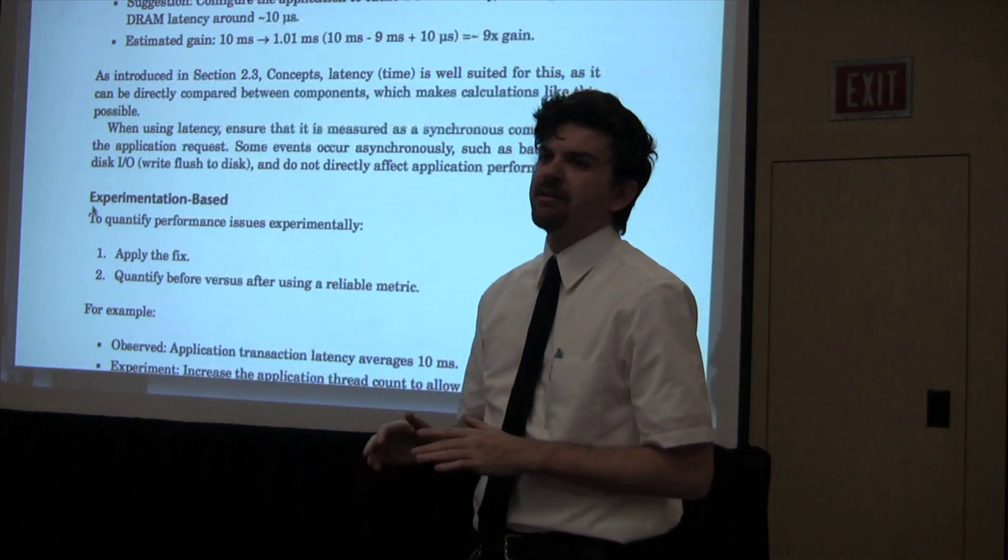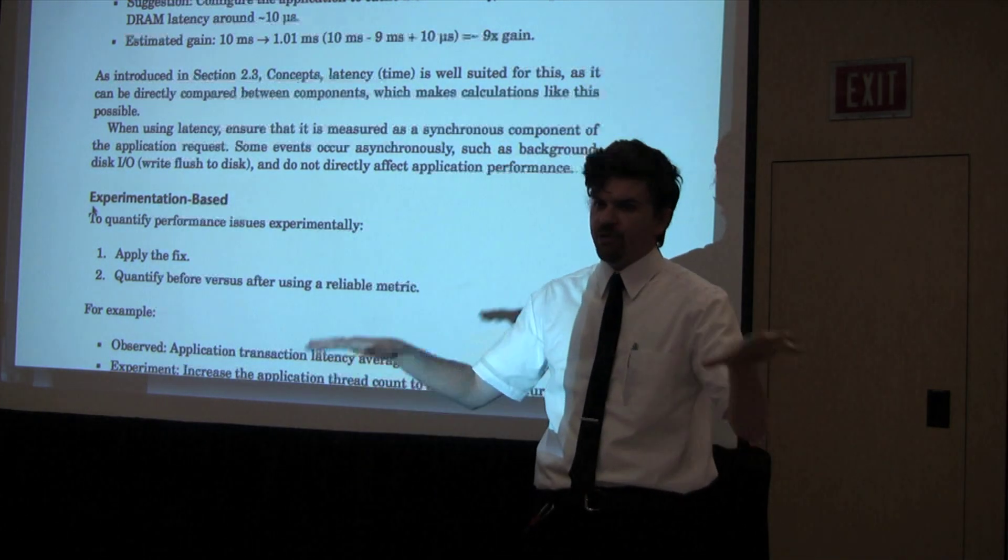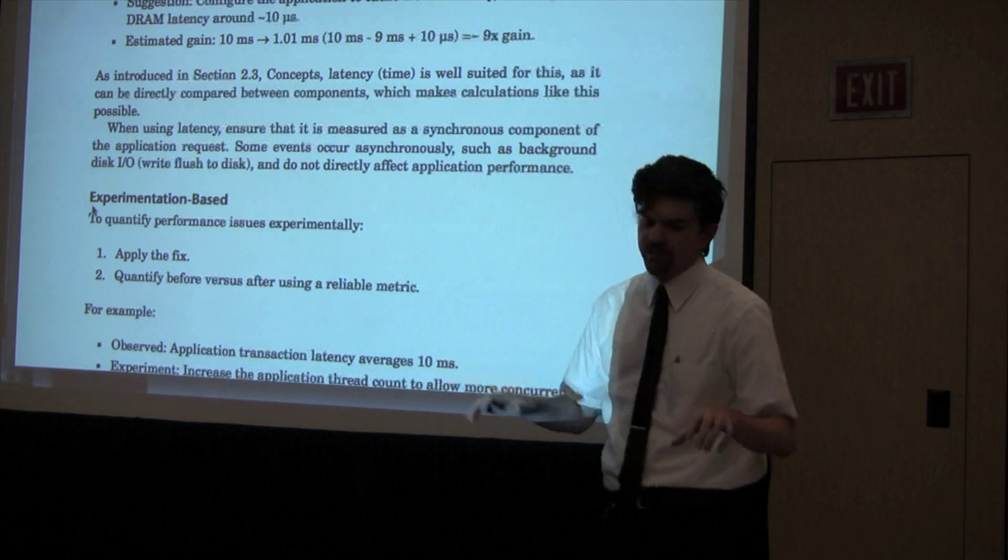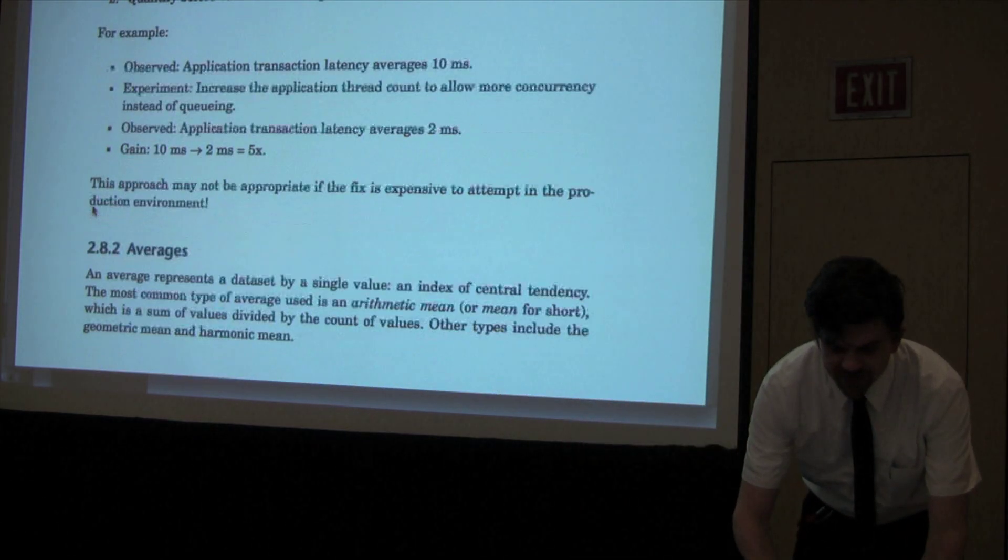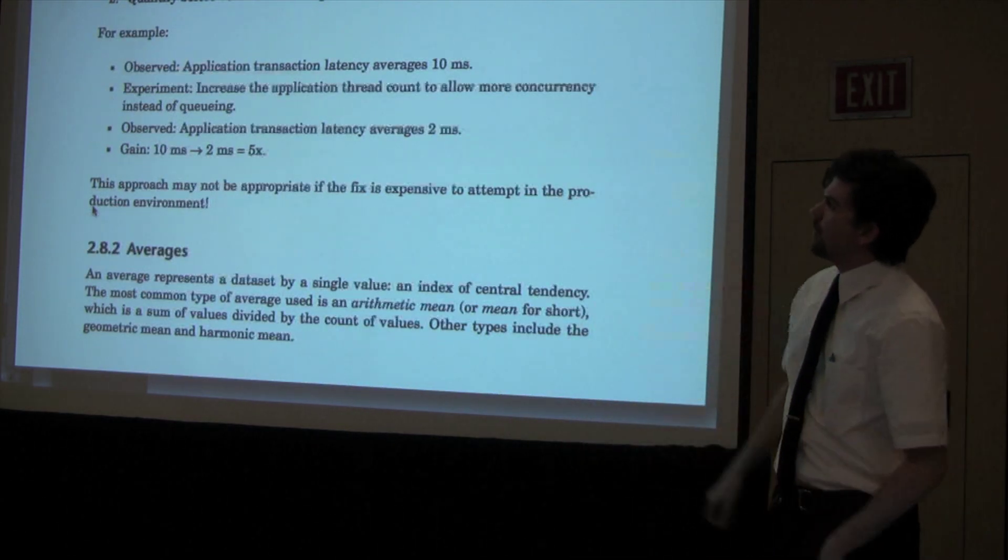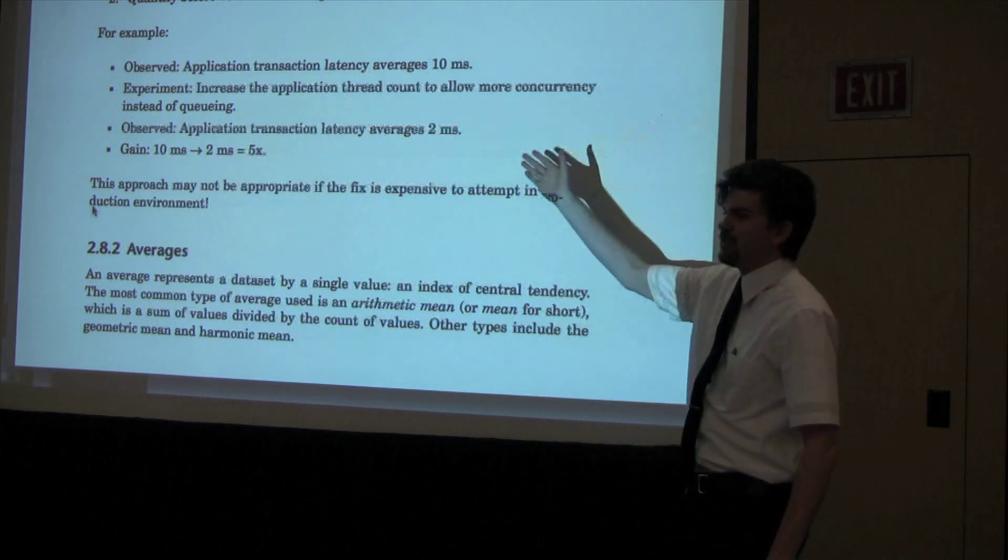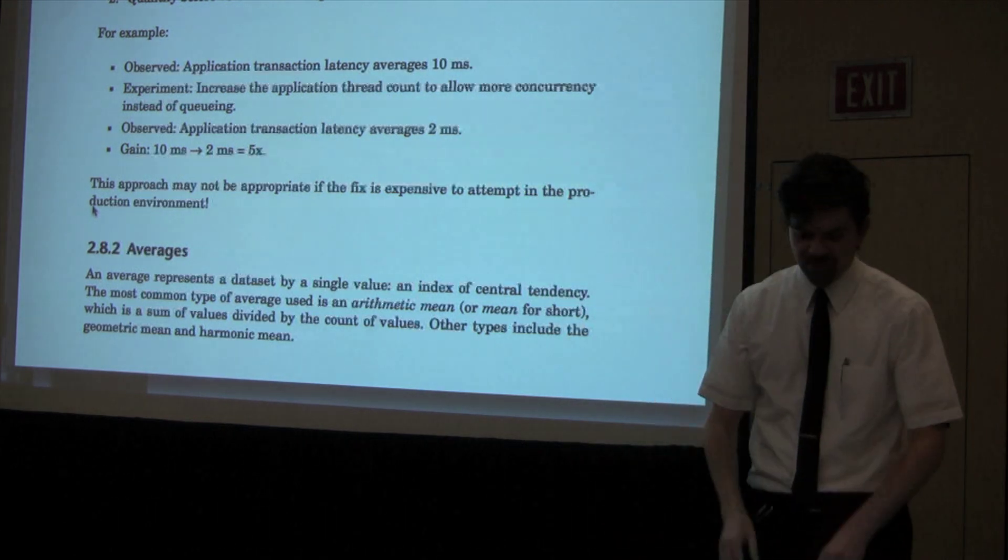We can do math like this because we've converted various metrics like throughput and IOPS into a common unit of currency. Experimentation-based is where you apply the fix and then you quantify before and after using a reliable metric. A lot of us do this, very simple: try it, didn't work.